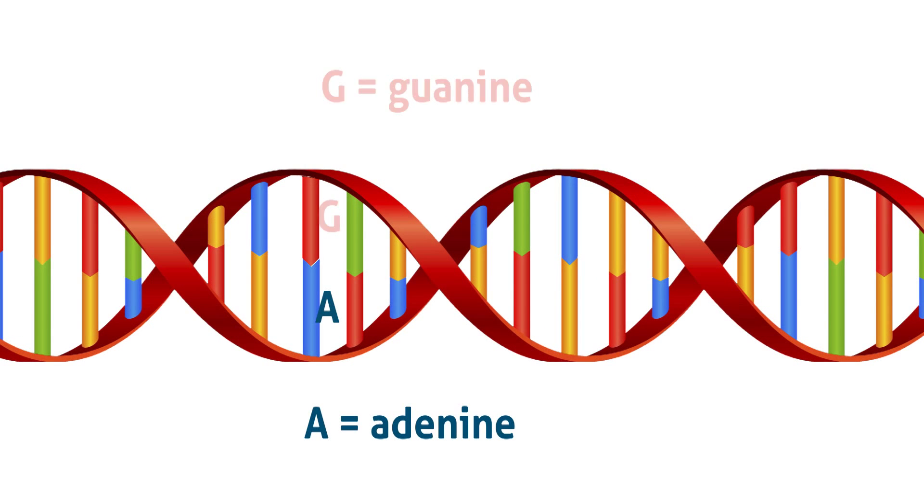These ladder steps, or pairs of nucleotides, represent the four molecules that make up the letters in the alphabet of genetics. The order of these nucleotides on one gene spell out the meaning, or function, of that gene.